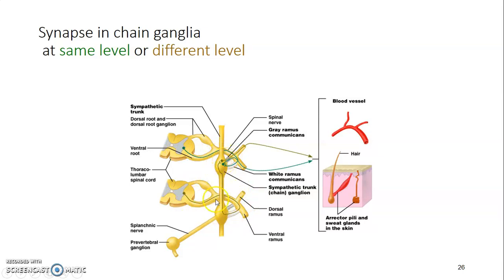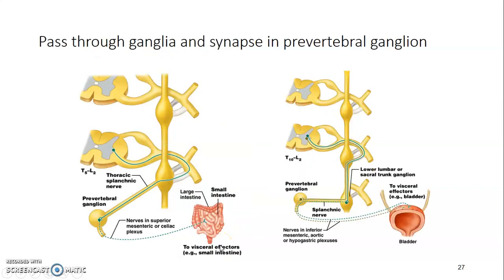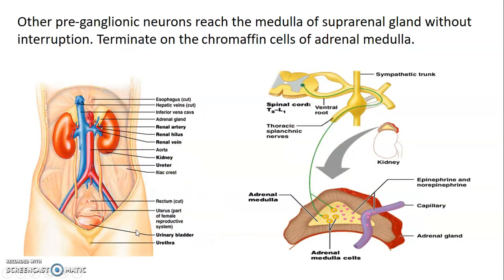Some preganglionic neurons do not synapse within the sympathetic trunk at all. Instead, they go to the medulla of the suprarenal gland — the adrenal gland, so called because it sits at the superior pole of the kidney. These preganglionic neurons leave the lateral horn of the spinal cord and terminate on chromaffin cells of the adrenal medulla. These chromaffin cells produce norepinephrine and epinephrine, which regulate the sympathetic nervous system.